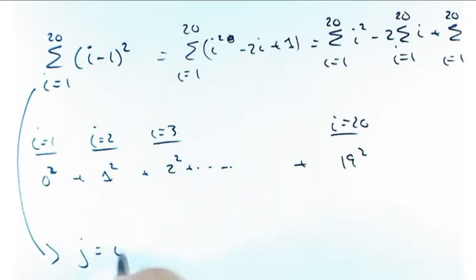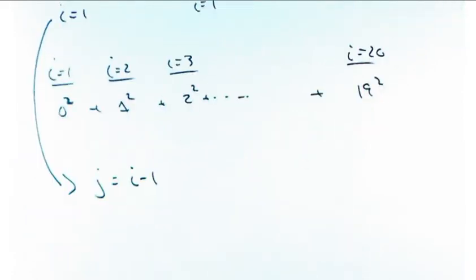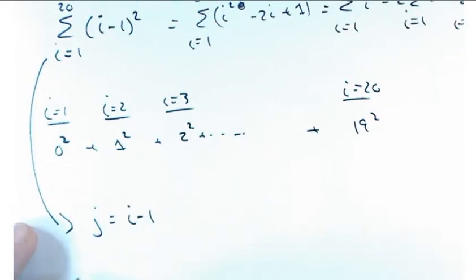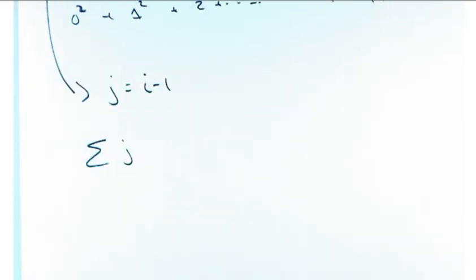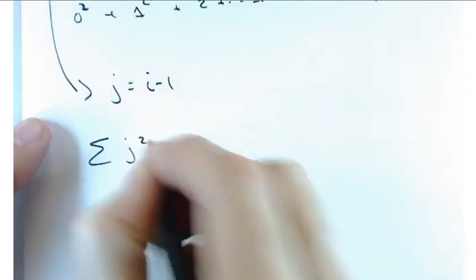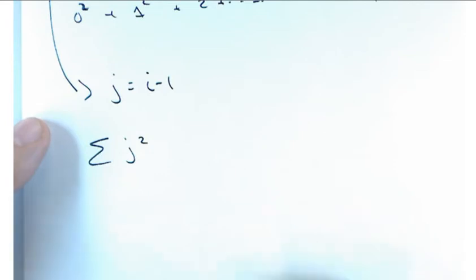J is going to take the place of I minus 1. Now, why is that? Because then I'll have the sum of J's. But I've got to figure out my new limits of summation. That's going to be a squared, by the way.